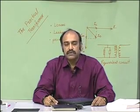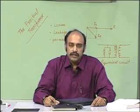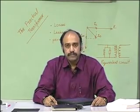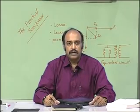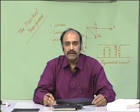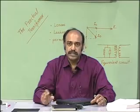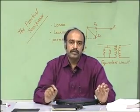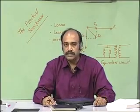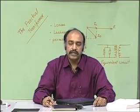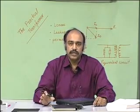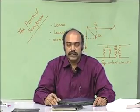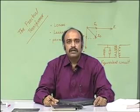In the case of isolation transformers, the turns ratio is normally kept at 1:1 and the primary side circuit is galvanically isolated from the secondary side circuit, meaning there is no electrical connection between the primary side circuit and the secondary side circuit. The only connection is through the medium of the core of the transformer, which is magnetically coupled.